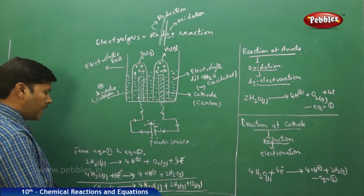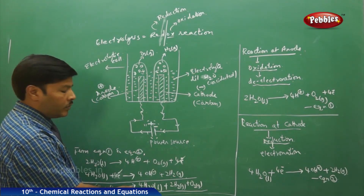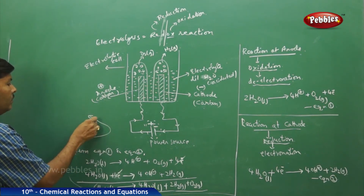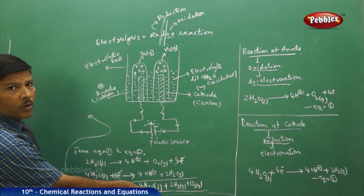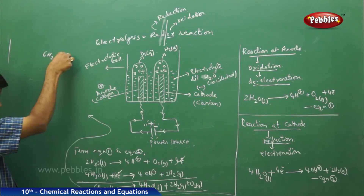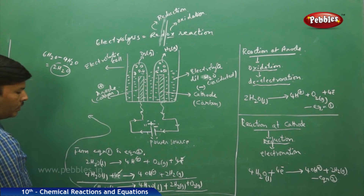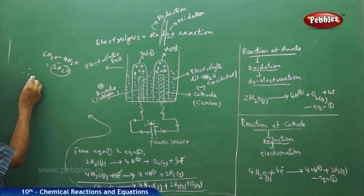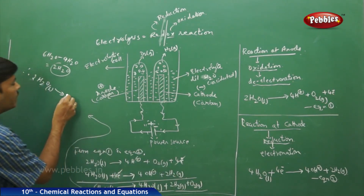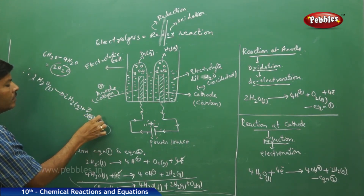On the reactant side we have 6 moles of water, and on the product side 4 moles of water. Subtracting: 6H₂O − 4H₂O = 2H₂O. Therefore the final simplified net equation is: 2H₂O(l) → 2H₂(g) + O₂(g). Two moles of hydrogen gas and 1 mole of oxygen gas are obtained.